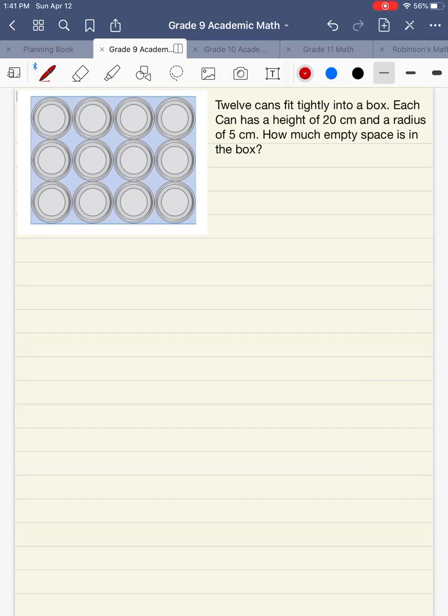We're going to continue on with measurement using three-dimensional objects. In our example here we have 12 cans that fit tightly into a box. Each can has a height of 20 centimeters and a radius of 5 centimeters. How much empty space is in the box?